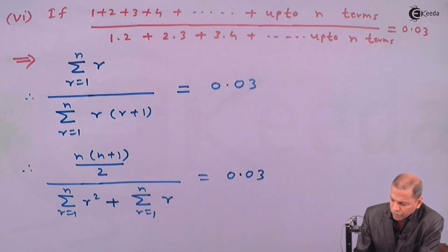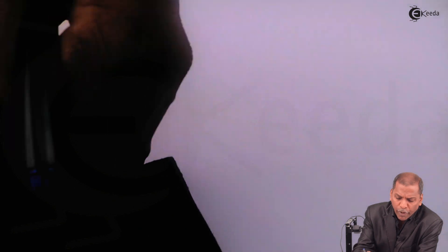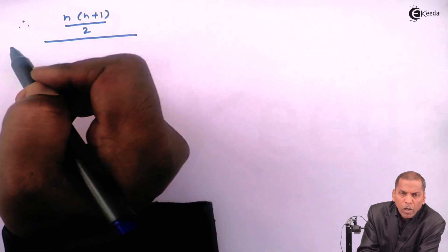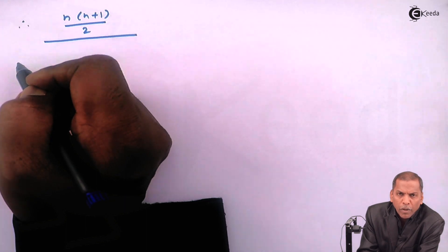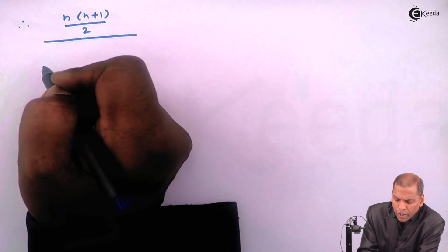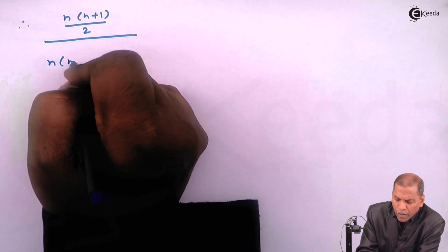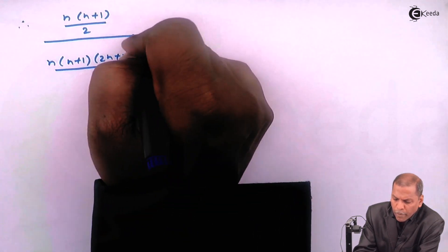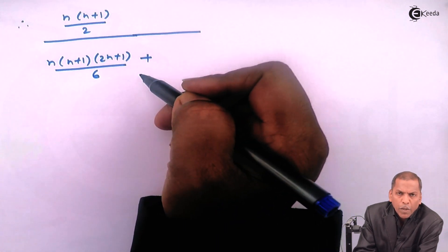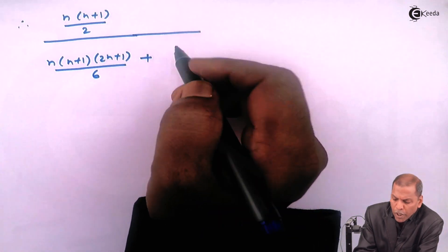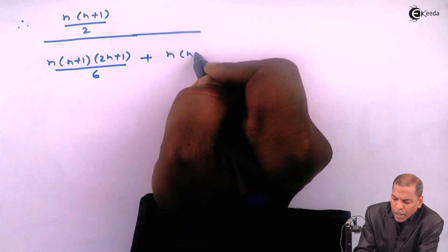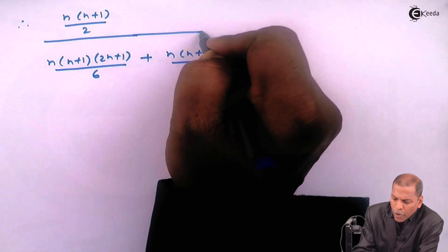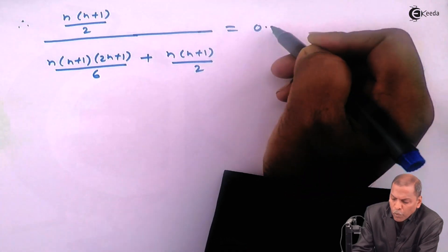Therefore, in the numerator we write n(n+1)/2 as it is. In the denominator, by theorem two, summation r² is written as n(n+1)(2n+1)/6, and by theorem one, summation r is written as n(n+1)/2. And that equals 0.03.